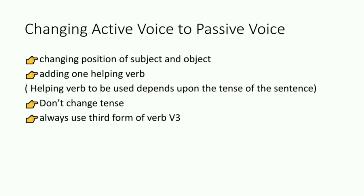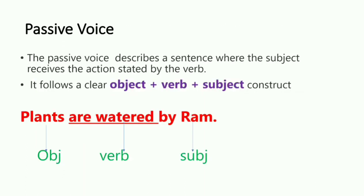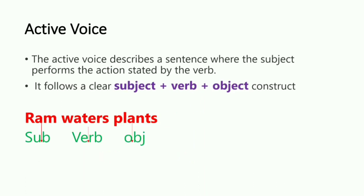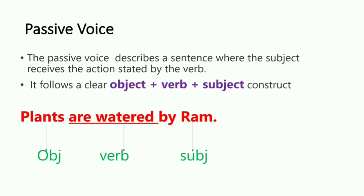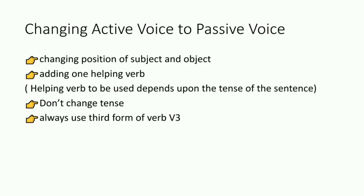You do not have to change the tense — in reported speech we change tenses (present goes to past, past goes to past perfect), but here you do not change the tense. Also, always use the third form of the verb. So basically: the structure in active voice is subject-verb-object, and in passive voice it becomes object-verb-subject. You change subject and object positions, use the third form of the verb, keep the tense the same, and add a helping verb.